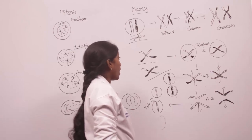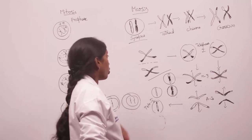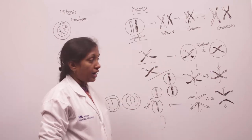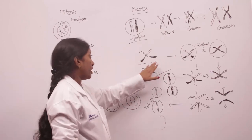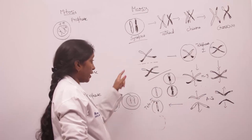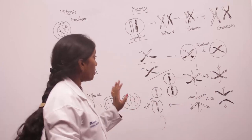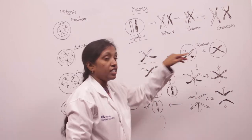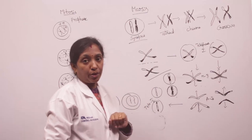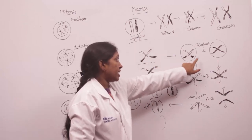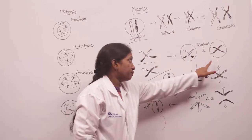The chromosome slides along the plane of the spindle. The centromere doesn't divide and the chromosomes reach the opposite poles. In telophase 1 we can see this arrangement.